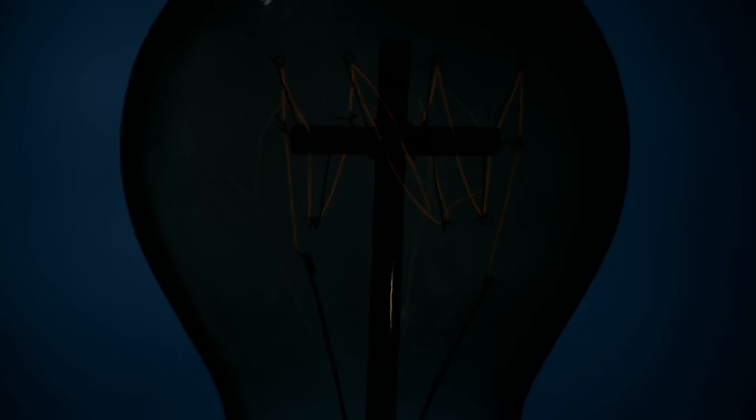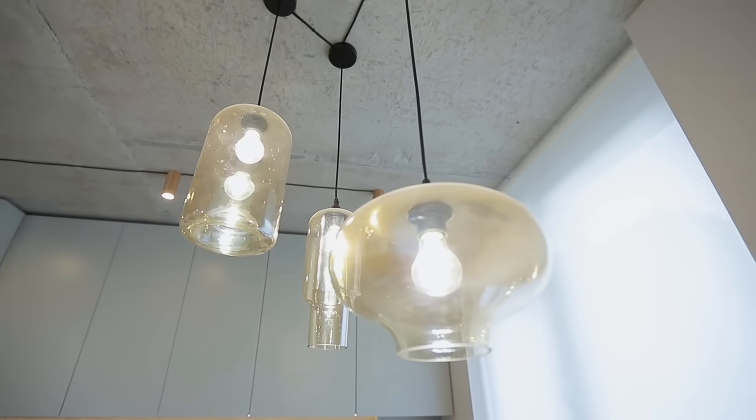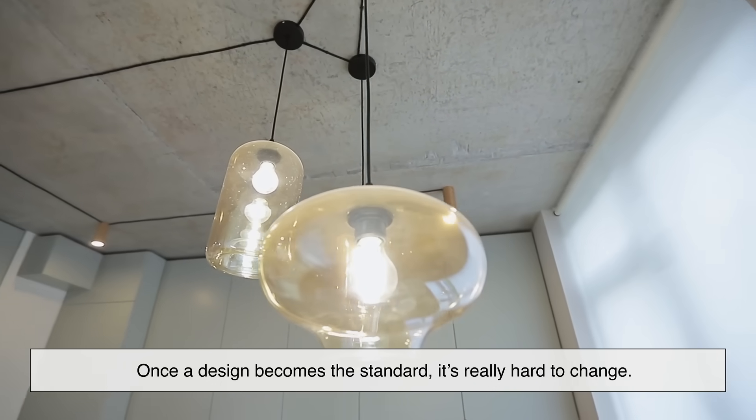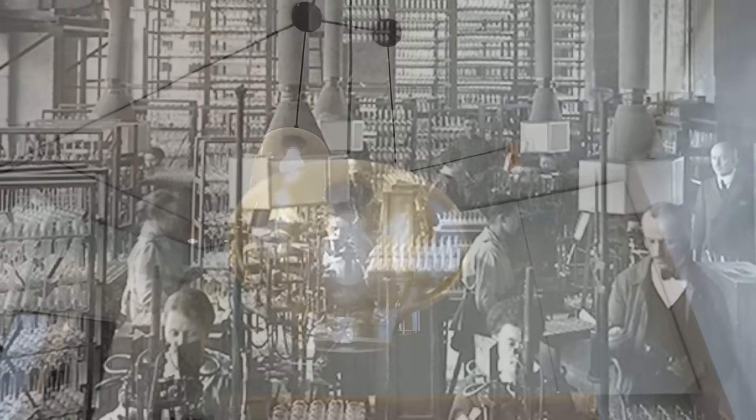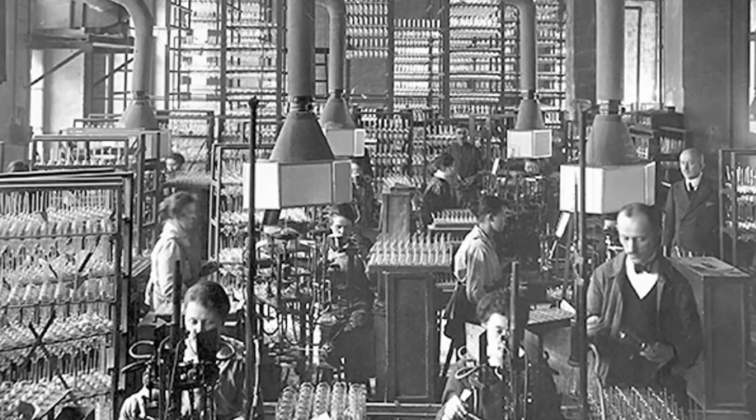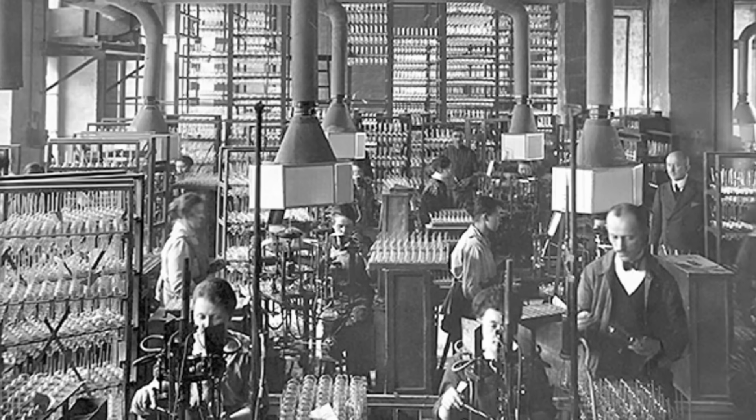Here's another reason the shape stuck: once a design becomes the standard, it's really hard to change. By the time light bulbs were being mass-produced in the early 1900s, factories were already set up to make pear-shaped bulbs.